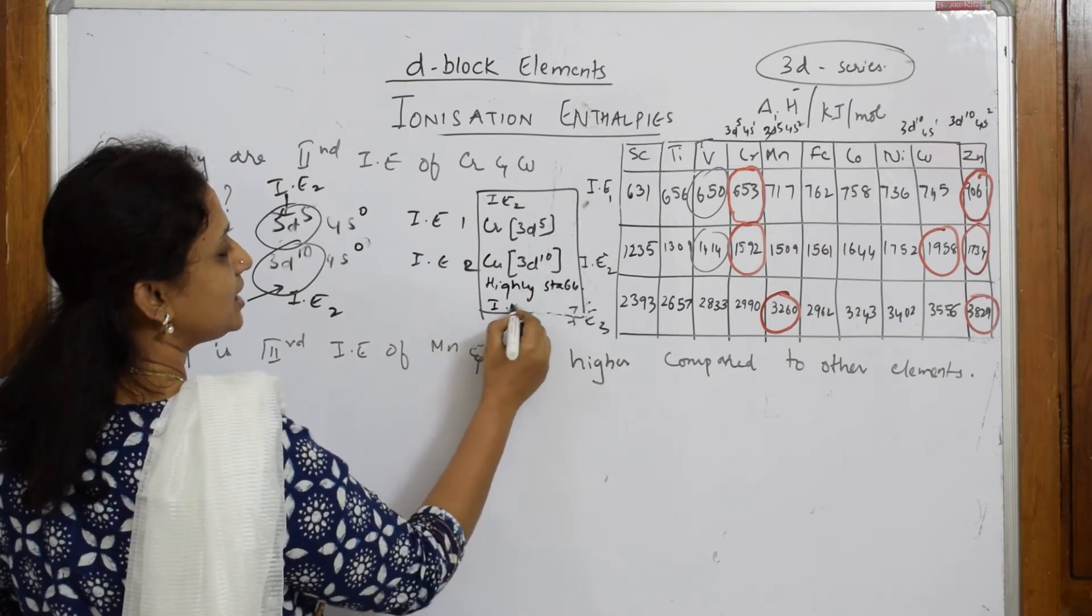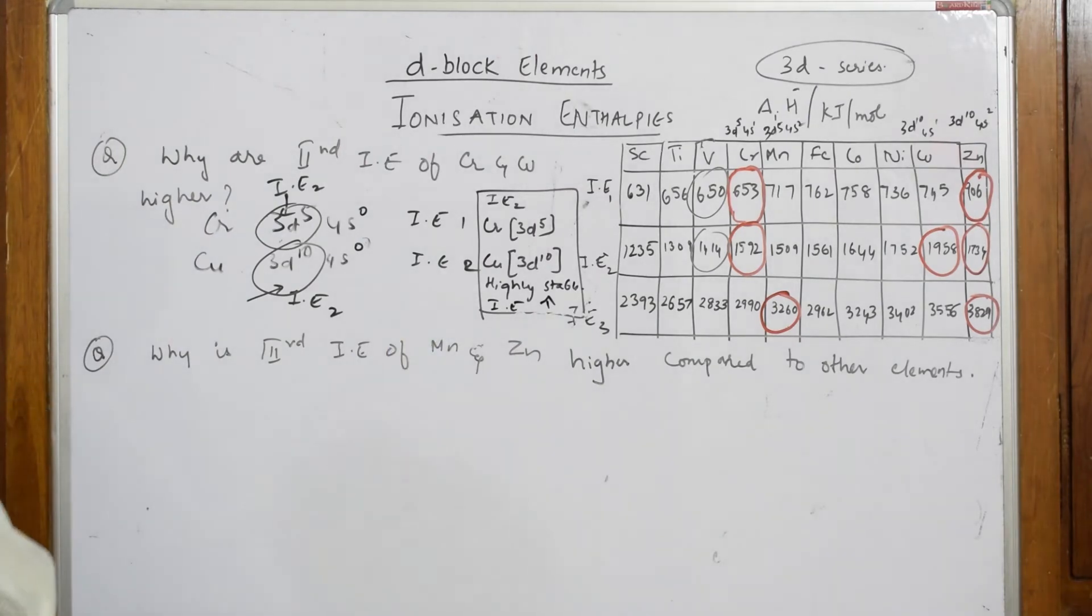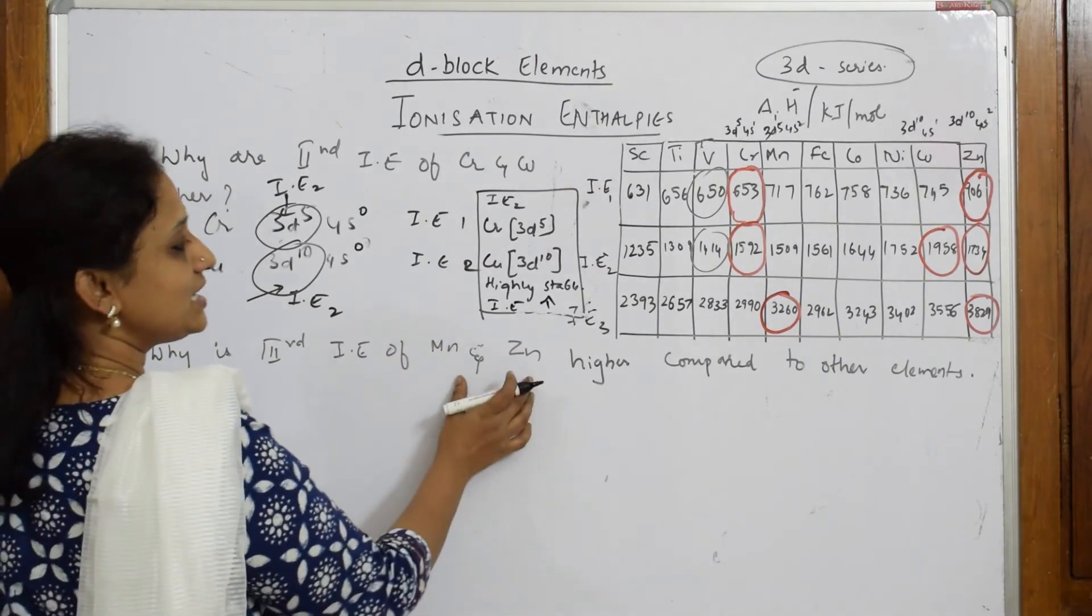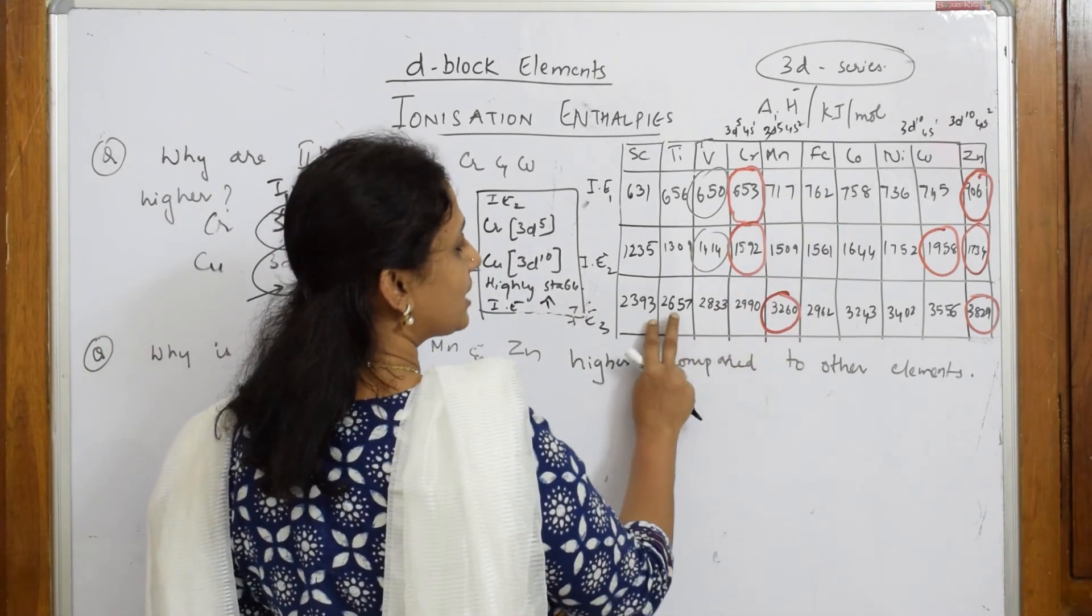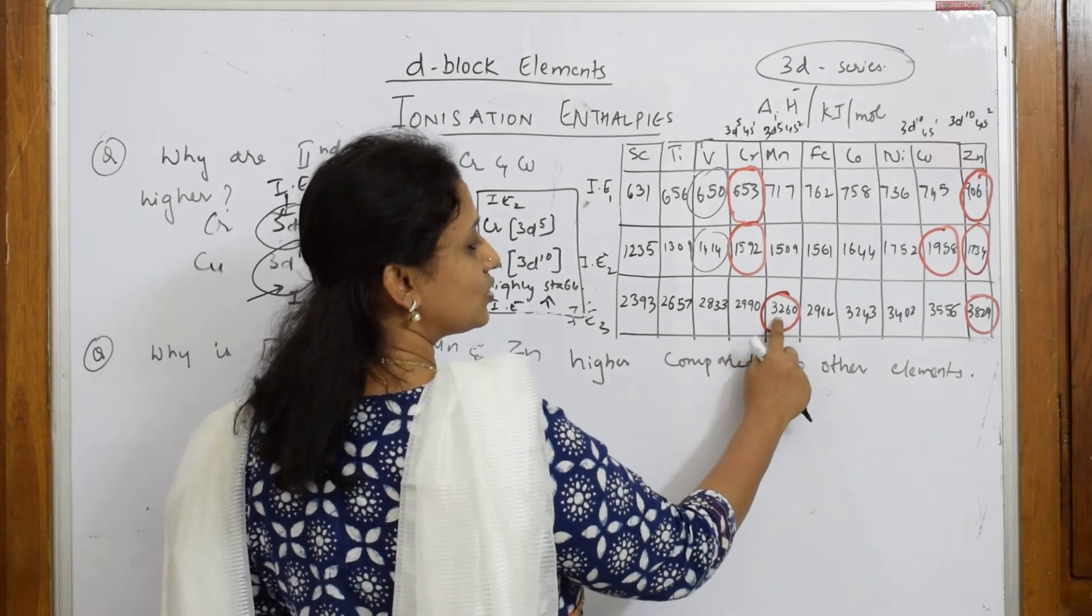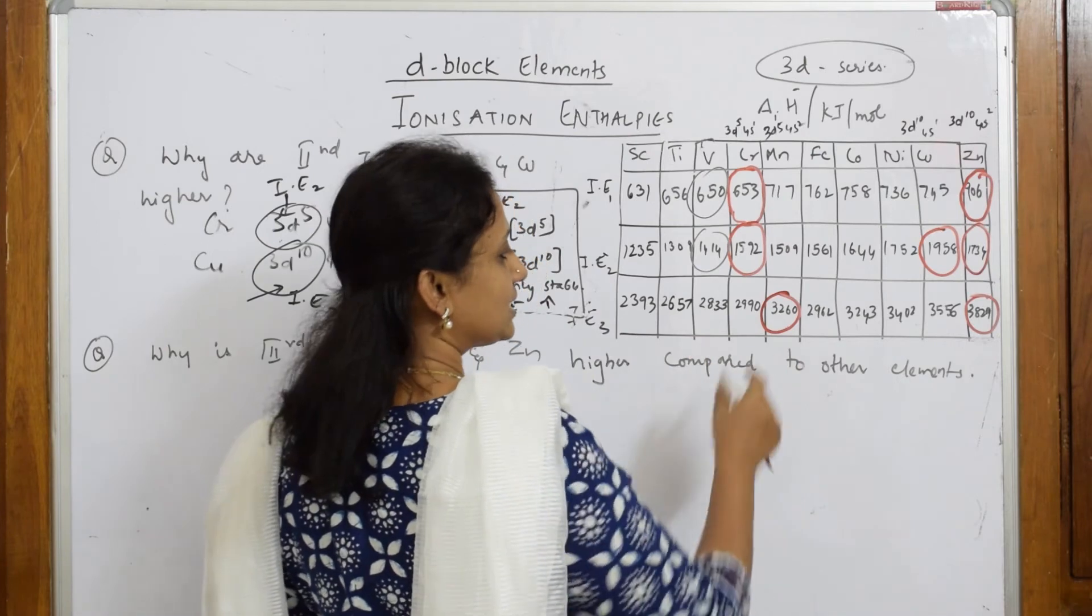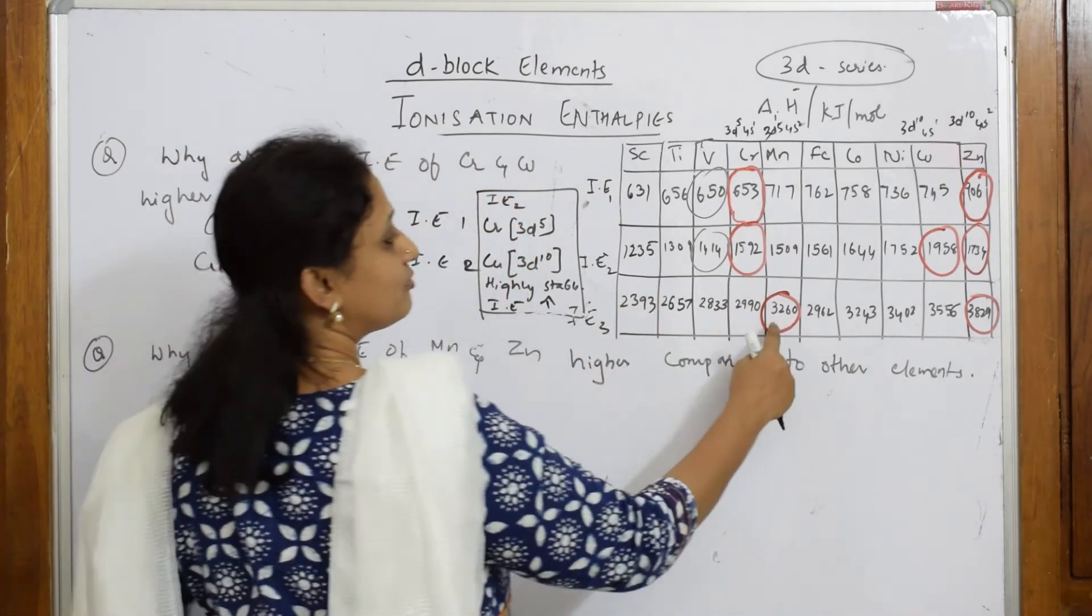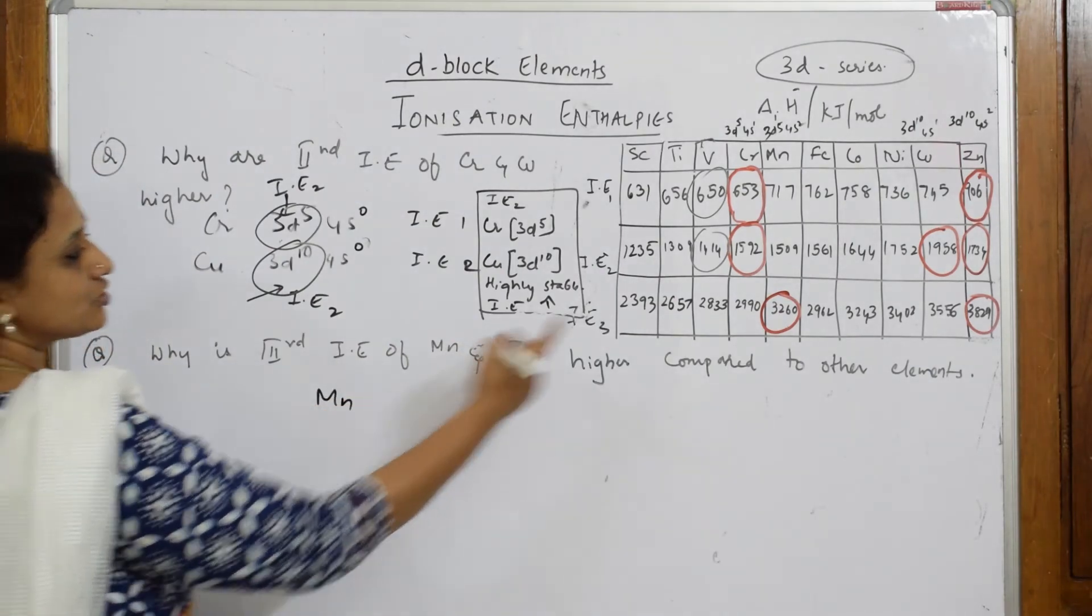Hence IE values are greater. This is the same concept here also. Now they've asked me third ionization enthalpy for manganese and zinc. For manganese, third ionization enthalpy when I compare all these are in 2000 value kilojoules, this is like 3000. Now again 2000, now 3000 increasing. They're asking you why is the third ionization enthalpy of manganese and zinc higher? Now for manganese, if I have to take...